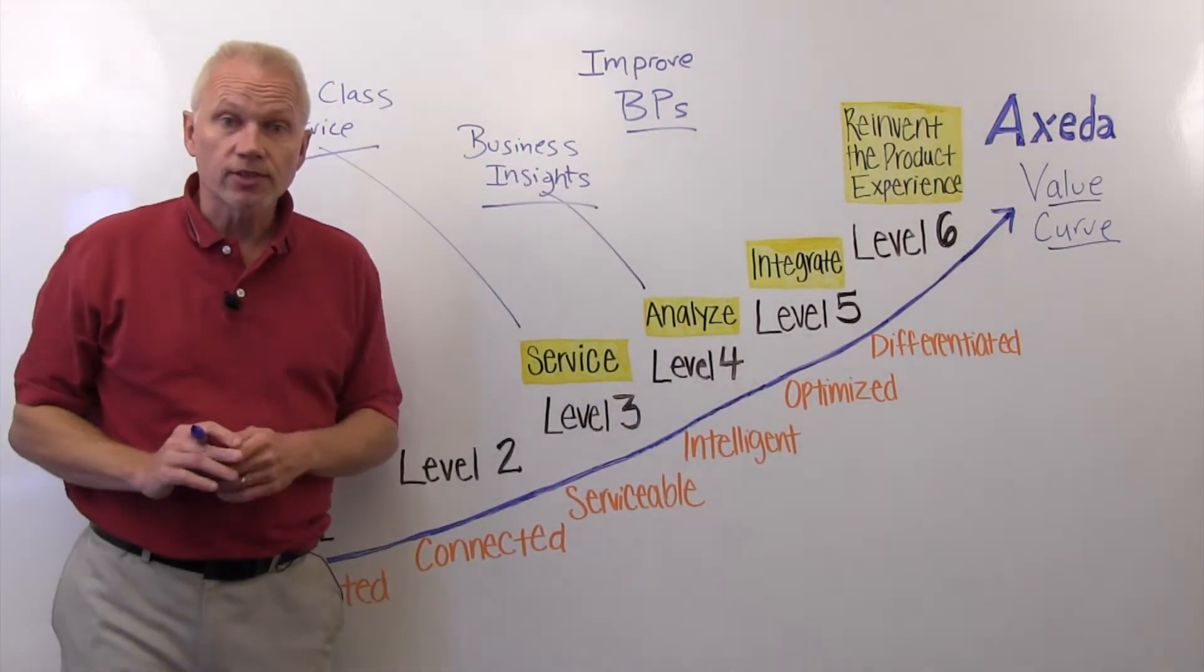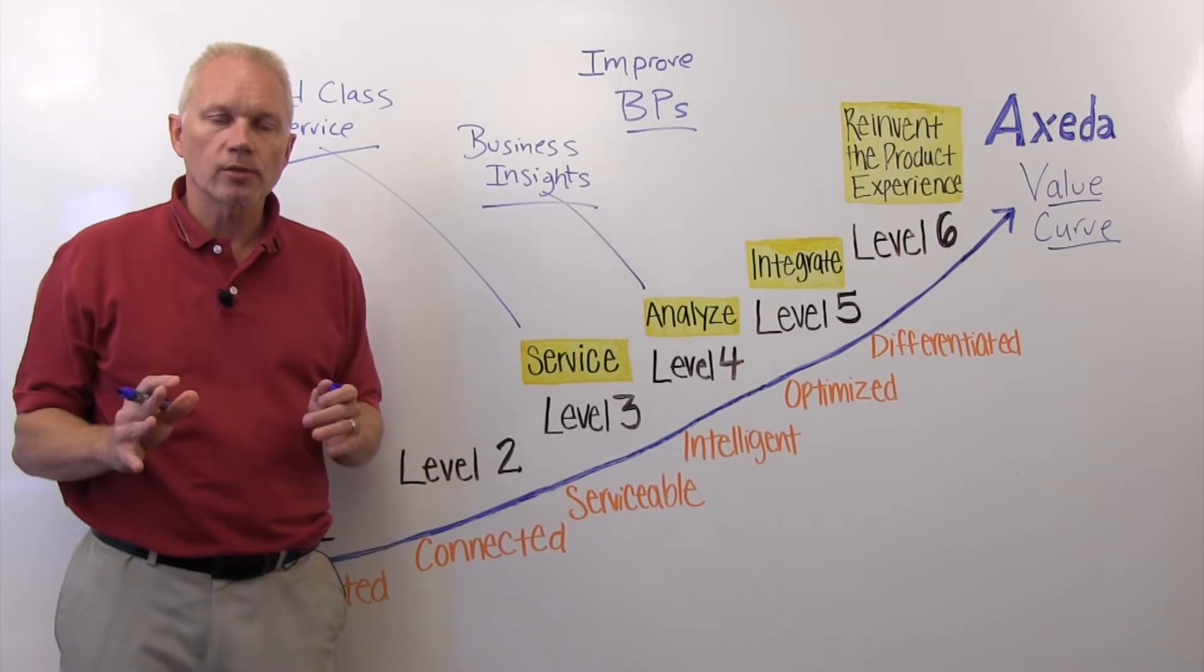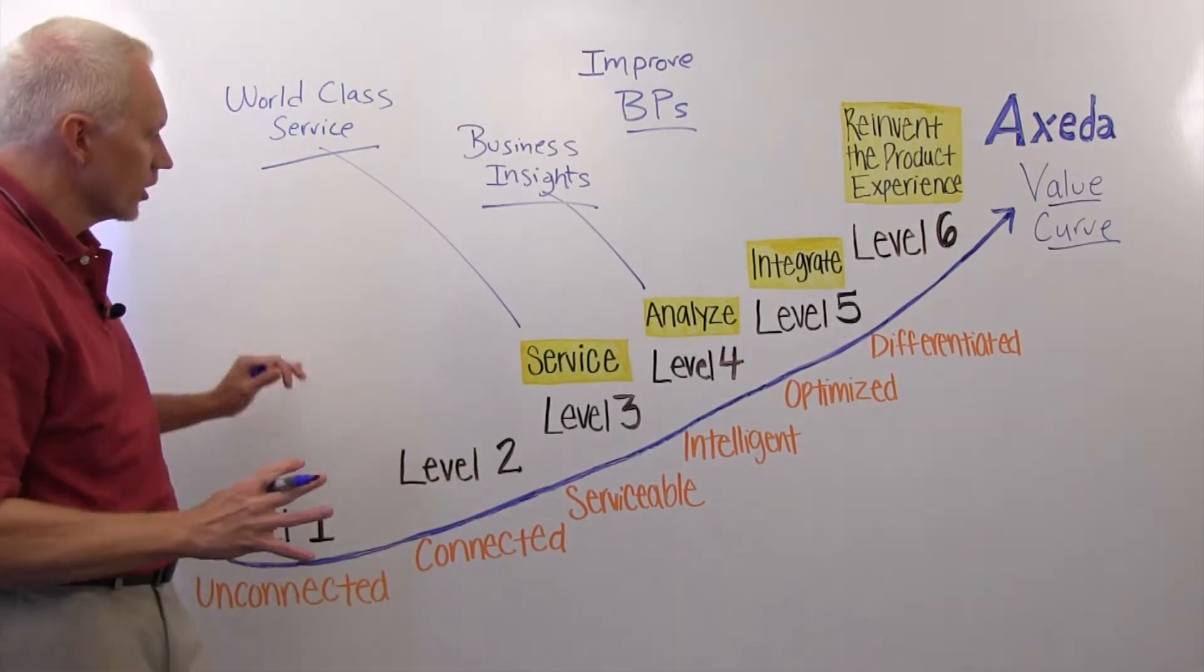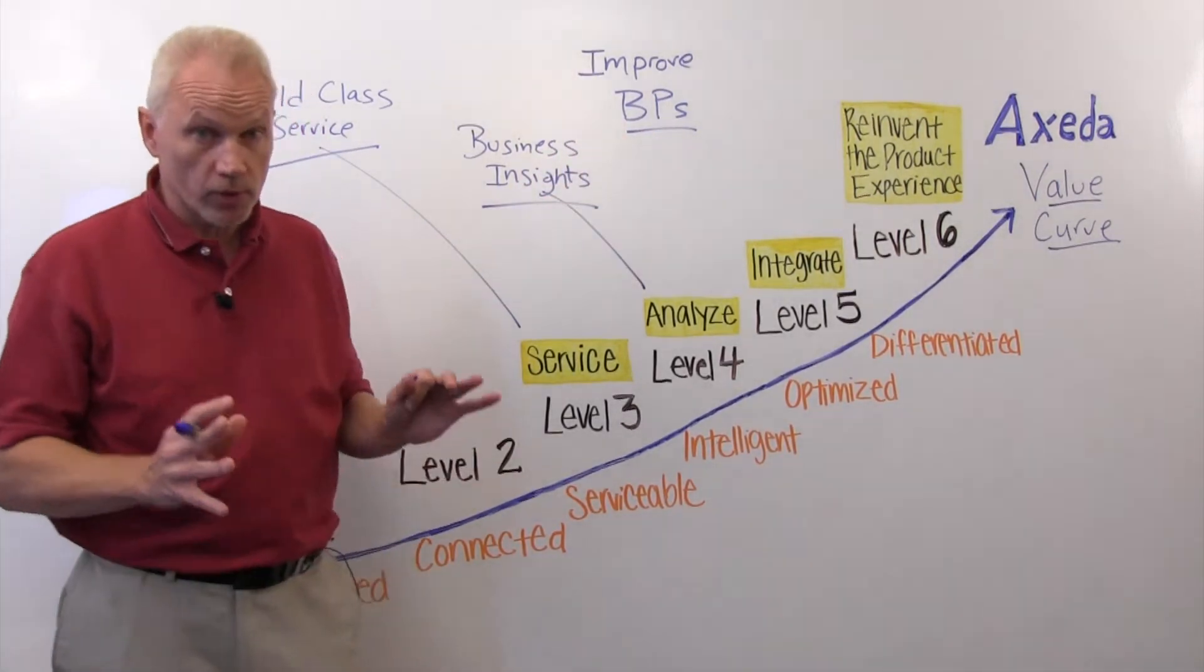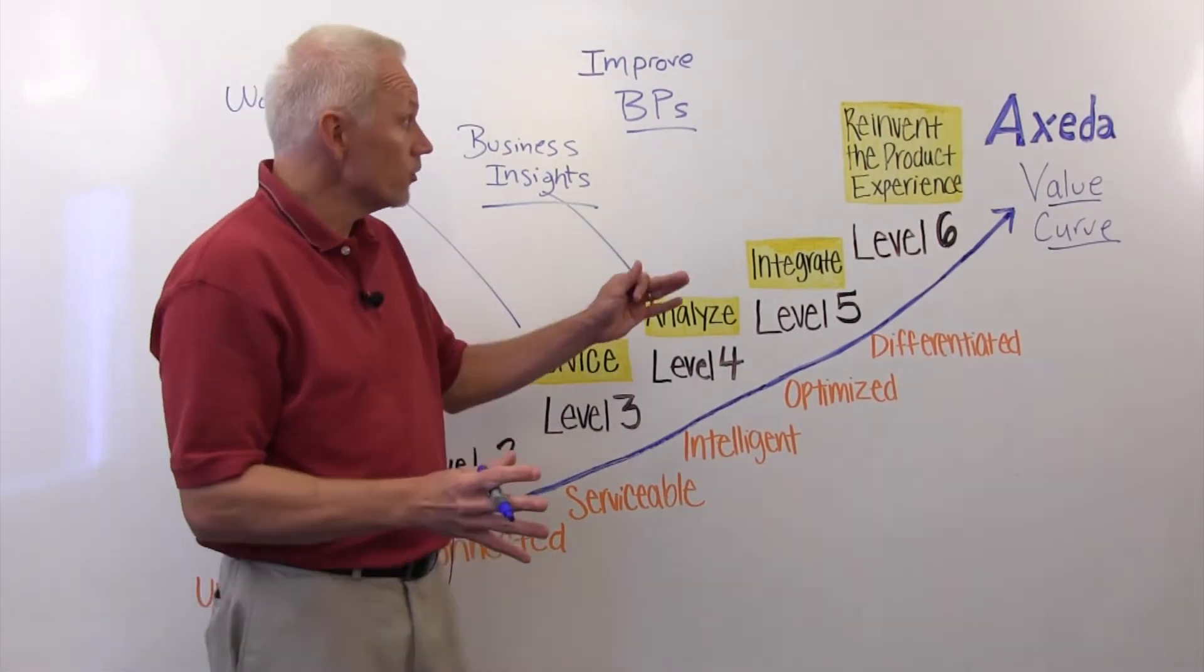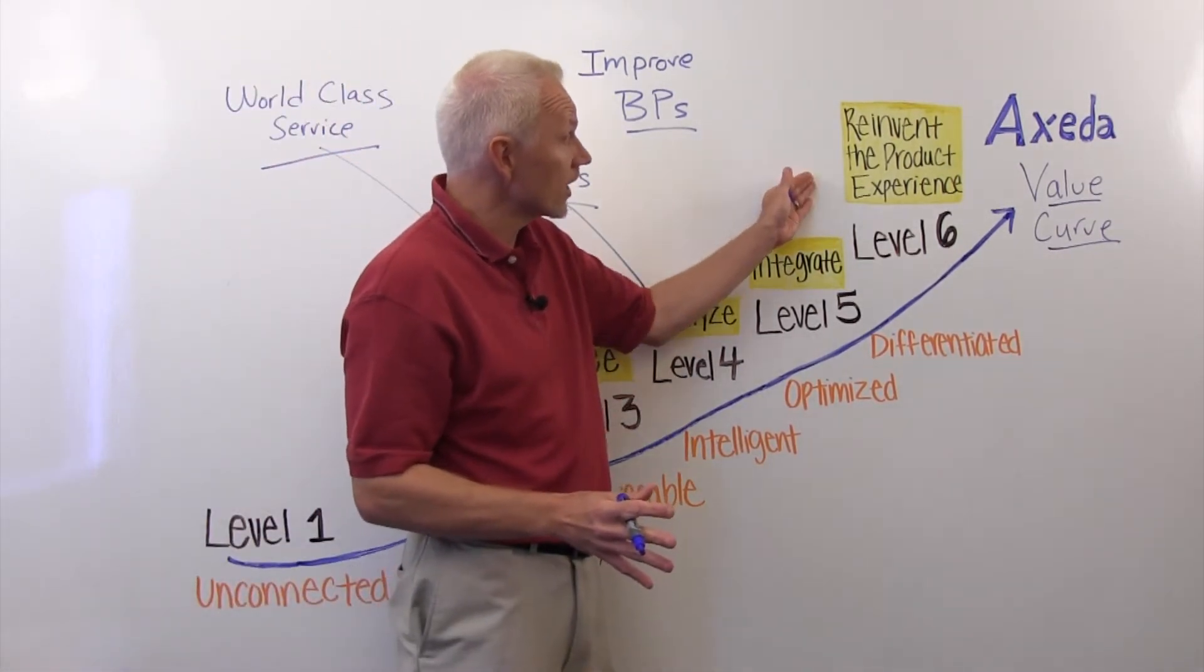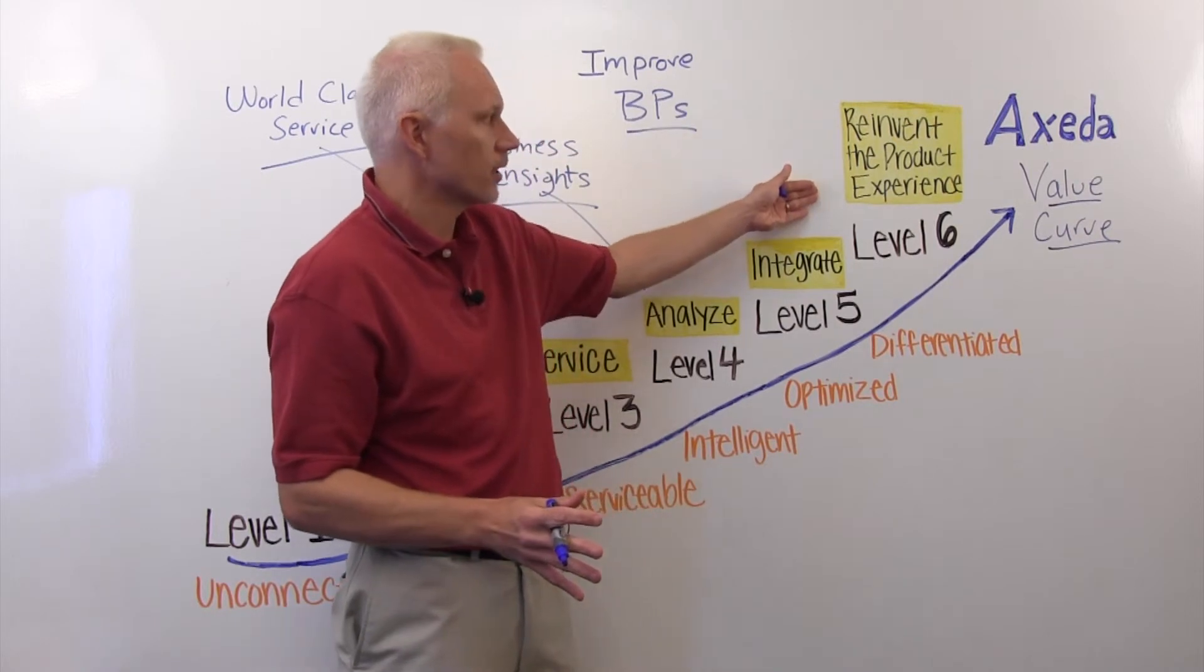And lastly, level six. Level six is where you start to provide value to your end customer. These first three are really about value to your enterprise, to you. But if you put that machine data in your end user's hands, it's going to reinvent the product experience.